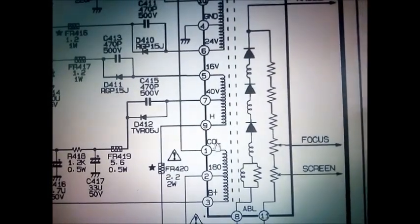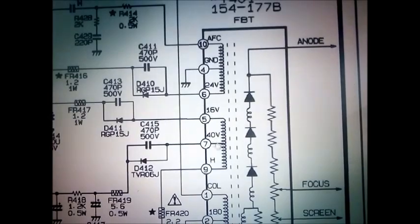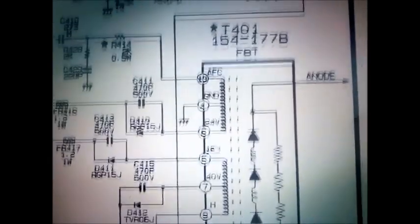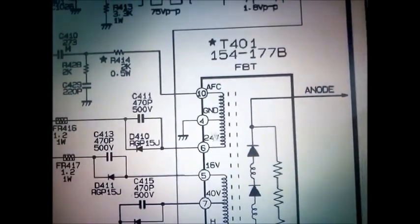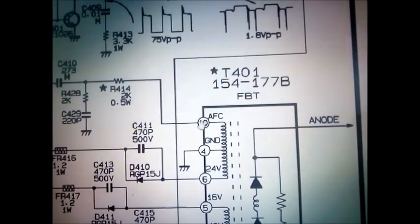B Plus H pin 7 is 40V, pin 5 is 16V, pin 6 is 24V, pin 4 is ground, pin 10 is AFC signal.